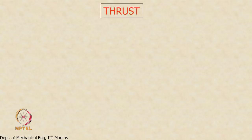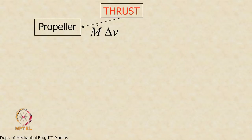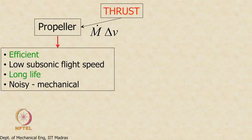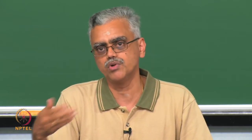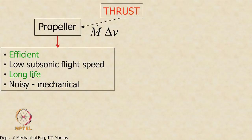Let us do a quick recap of what we discussed earlier regarding propulsion technologies. The propulsion device must generate thrust, and there are two ways: one is to use a propeller, which accelerates a larger amount of mass through a small change in velocity. The advantages of a propeller — listed in green — are that its propulsive efficiency can be very high and it has a long life, mainly because it is not exposed to high temperature or high pressure. However, it is very noisy mechanically.